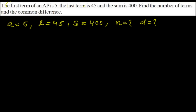As I mentioned, there are five variables altogether in the two formulas for the sum of n terms. Generally in problems, we are given three things and need to find the remaining one or two. Here we have the three known values and need to find these two unknowns.